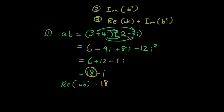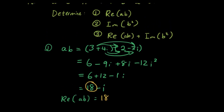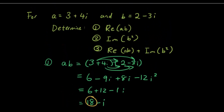So when it says we want the real part, you ignore whatever the imaginary part is — so we ignore the minus 12i. Now let's do number 2, which is the imaginary part.